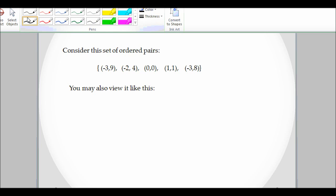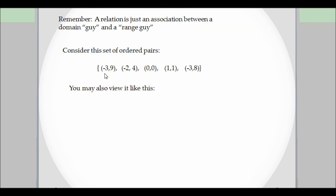So let's try this one. We have negative 3, negative 2, I'm writing down all the x's. Notice that negative 3 is already in there, so I don't write it again because it's already there. And then the corresponding y, we've got 9, 4, 0, 1, and 8.